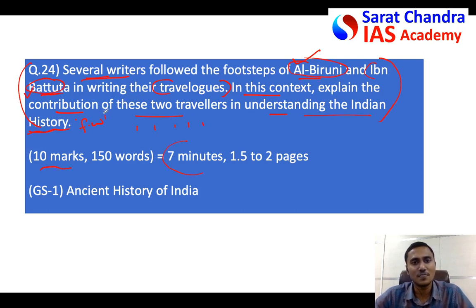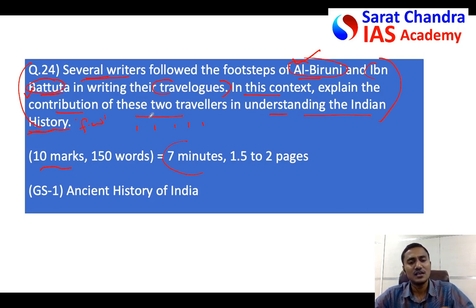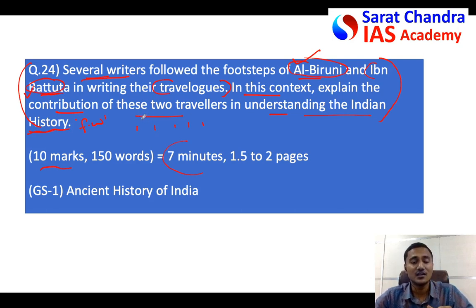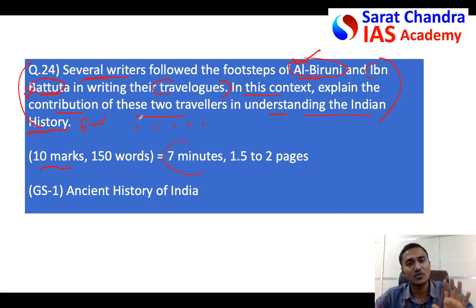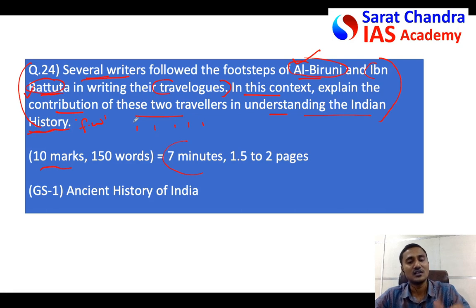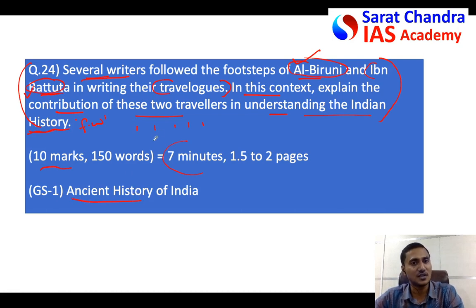The evaluator goes through many papers where the student does not know any facts but tries to make up the answer. Such students can still get three or four marks if they write in really good language. So if you are a student who knows some facts, try to write all those facts in the introduction itself so the evaluator understands that this candidate actually has knowledge on the question. Then in the remaining body, write whatever else you want. This is my suggestion for ancient history or medieval history questions.